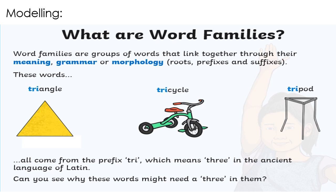In the first picture we see three vertices in a triangle, or three sides in a triangle. In the second picture we see three wheels in a tricycle, and in the tripod there are three legs.